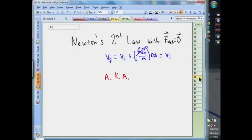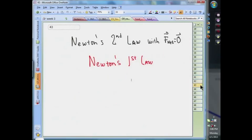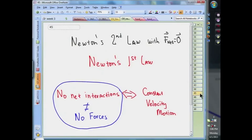Some final points. Newton's second law, for no net interactions, has a special name. It's called Newton's first law. Here's one way to state Newton's first law: When our system has no net interactions with its surroundings, the system moves at constant velocity.